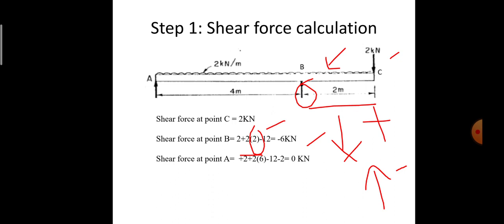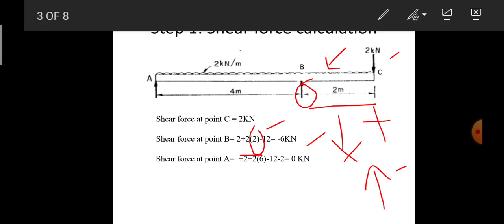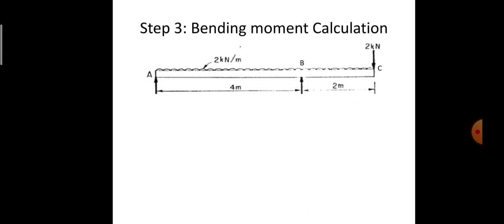For shear force at point A, summing from C: +2 (point load at C), +2×6 = +12 (UDL over 6 m), −12 (R_B upward at B), and −2 (R_A upward at A, taken as negative by the right-hand sign convention). Total: 2 + 12 − 12 − 2 = 0. Shear force at A = 0, which verifies equilibrium.